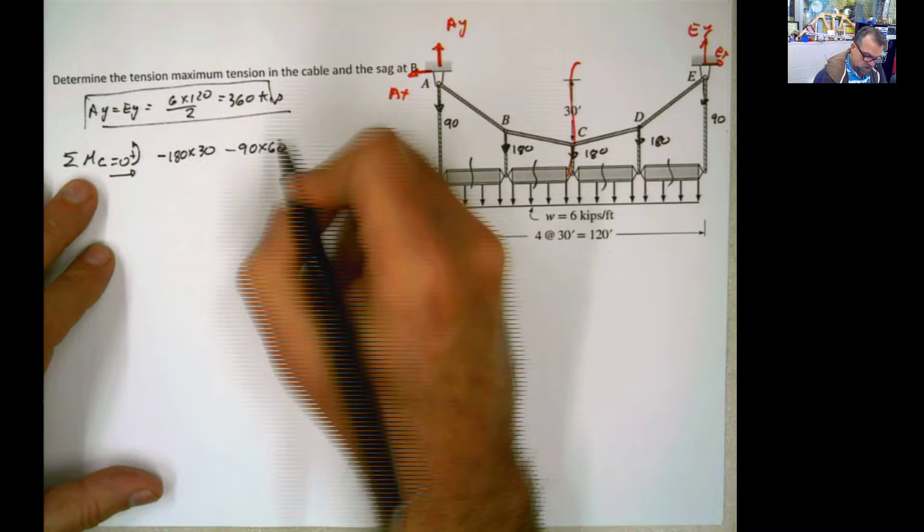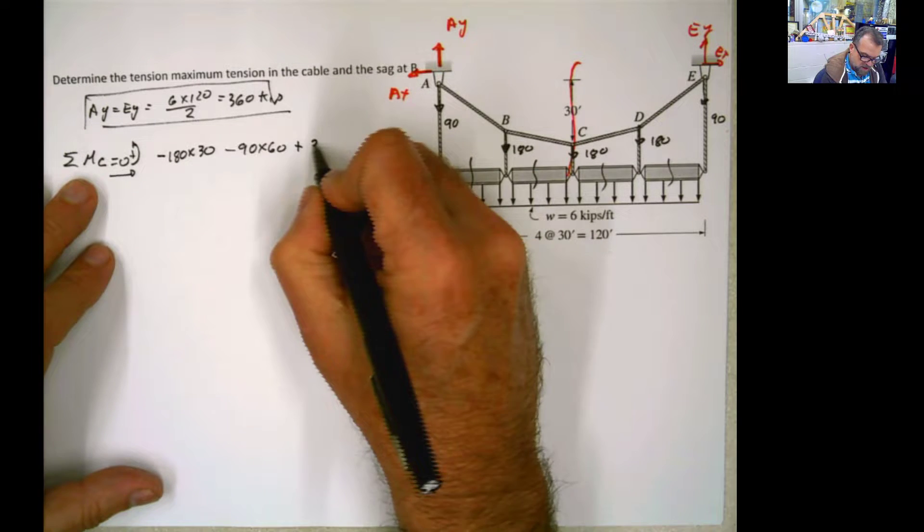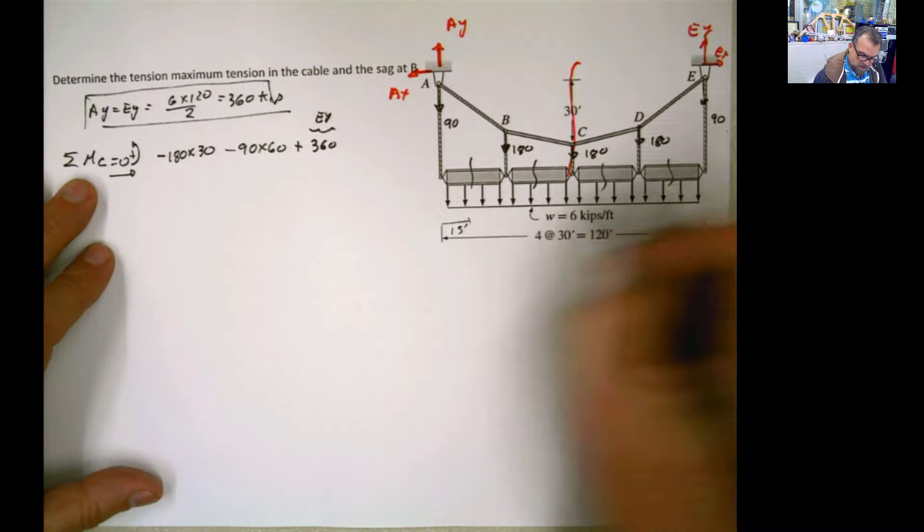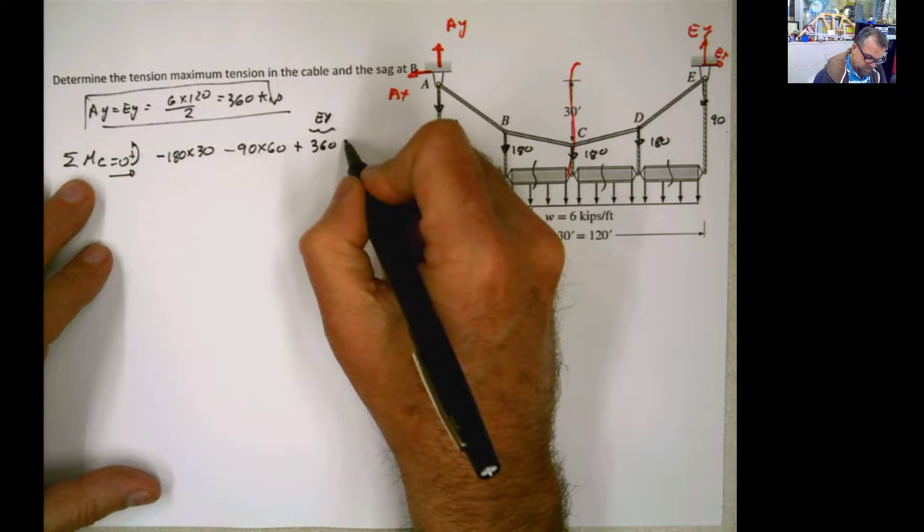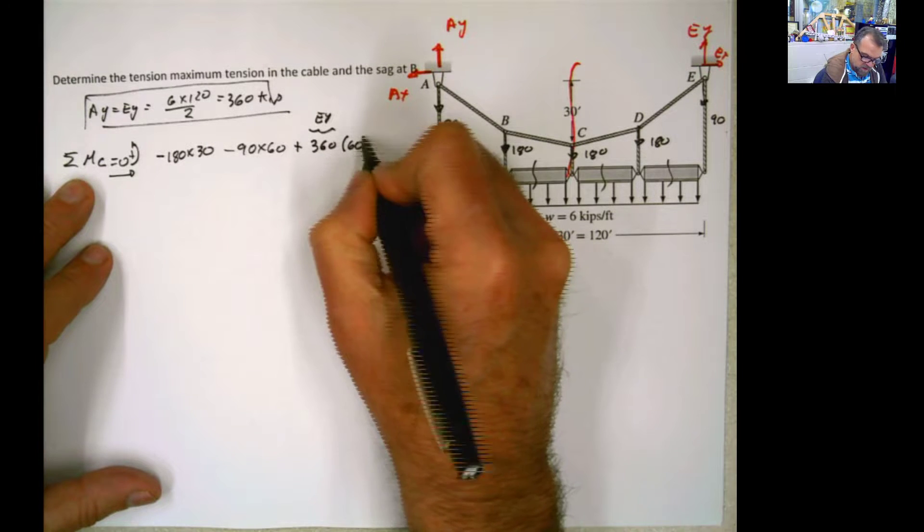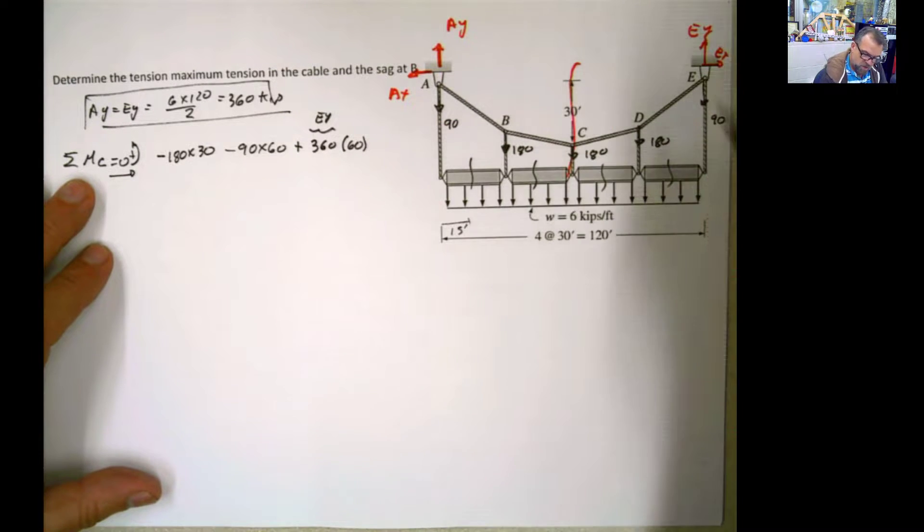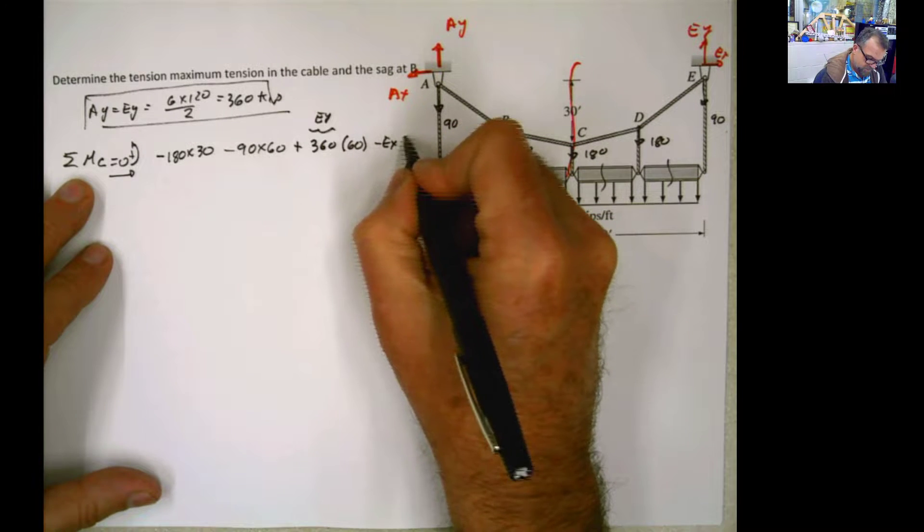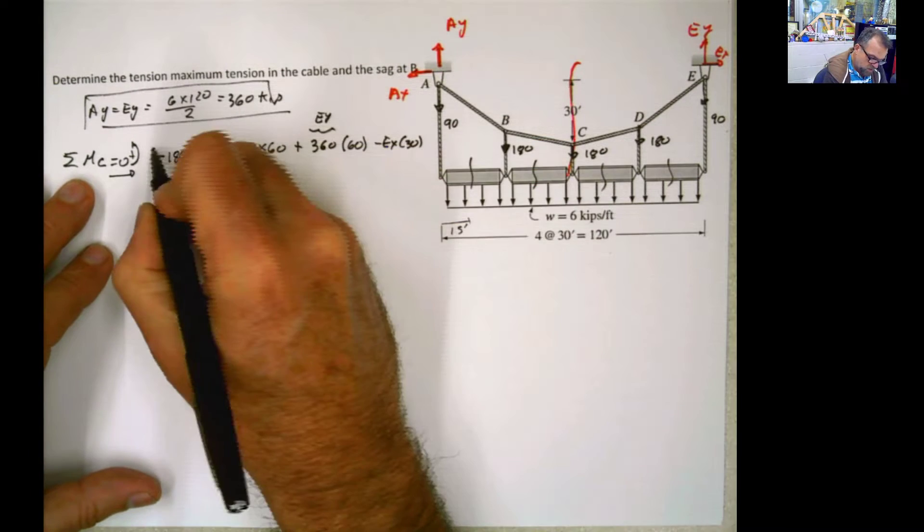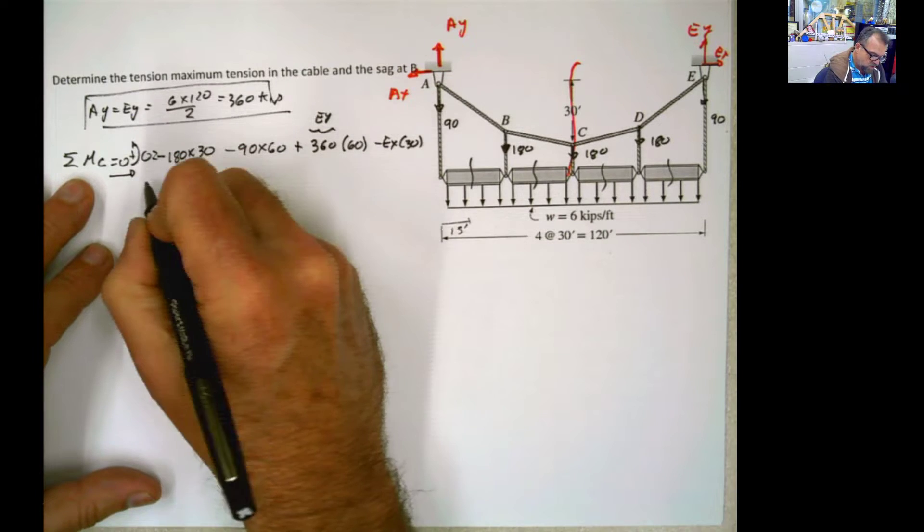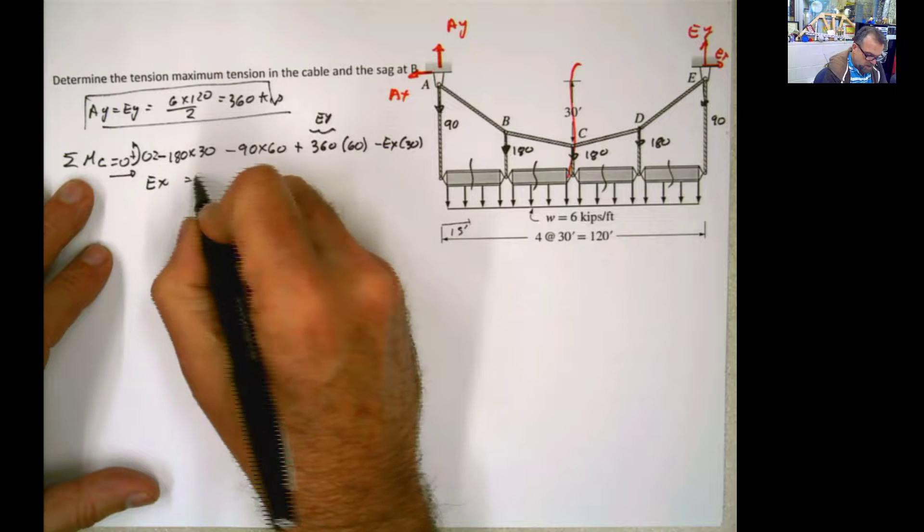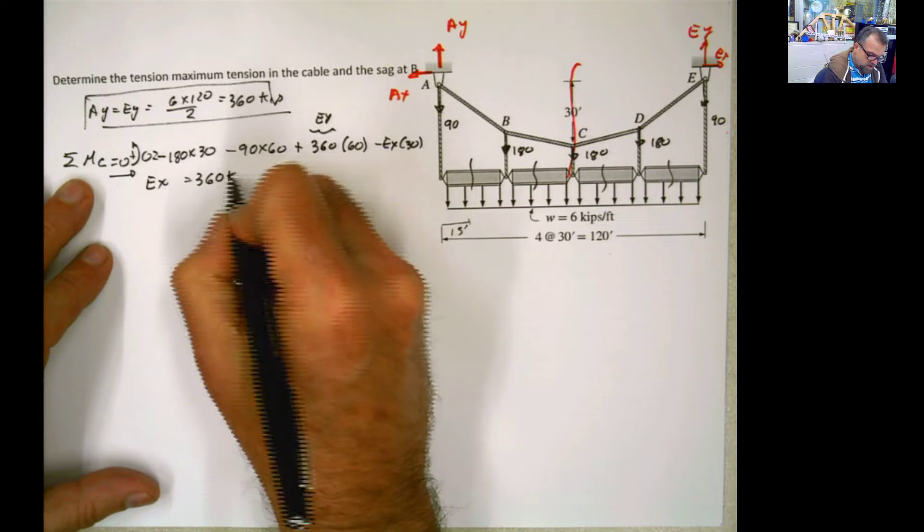we're going to say negative 180 times 30, negative 90 times 60, plus Ey, which is 360 times 60, minus Ex times 30. And, of course, that has to be equal to 0. So you can solve for Ex. Solving for Ex, the Ex is equal to 360 k.